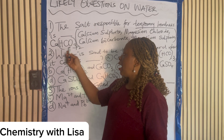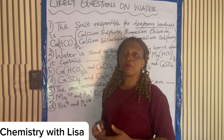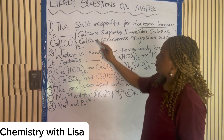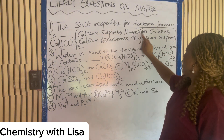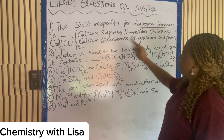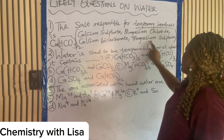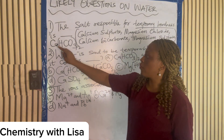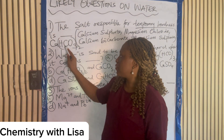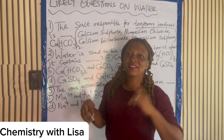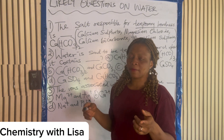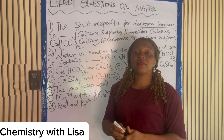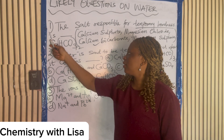This is a type of hardness you can remove by boiling. Looking at the answers — calcium sulfate: no; magnesium chloride: no; calcium bicarbonate: yes. The answer is calcium bicarbonate, another name for calcium hydrogen carbonate. This is why I always tell students it's important you know both the chemical formula and the chemical name.